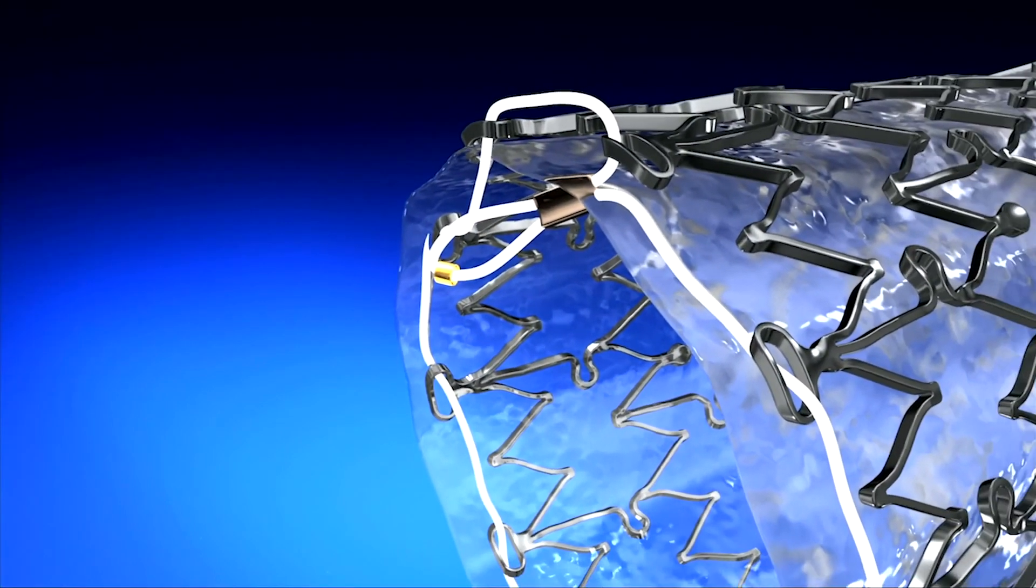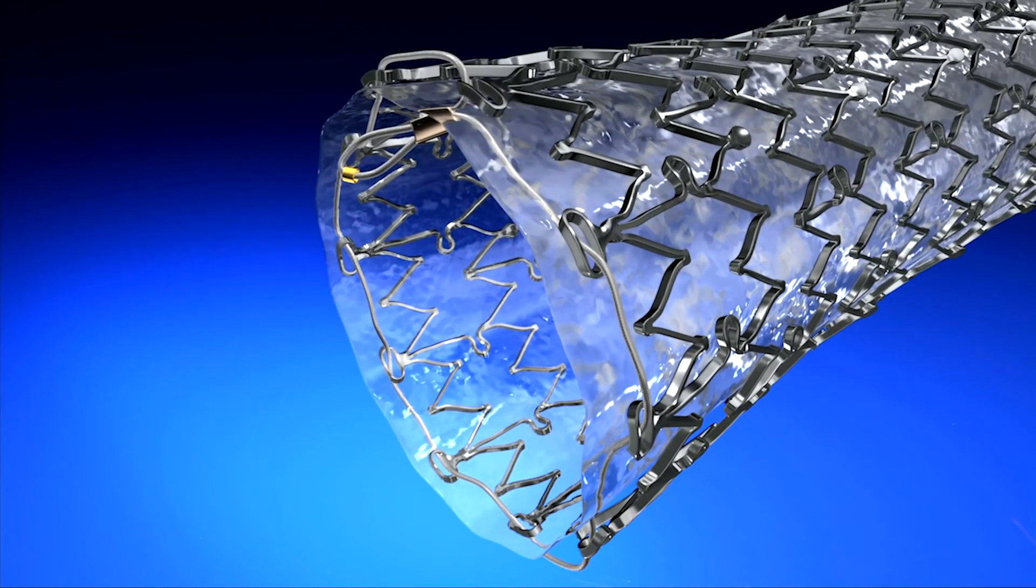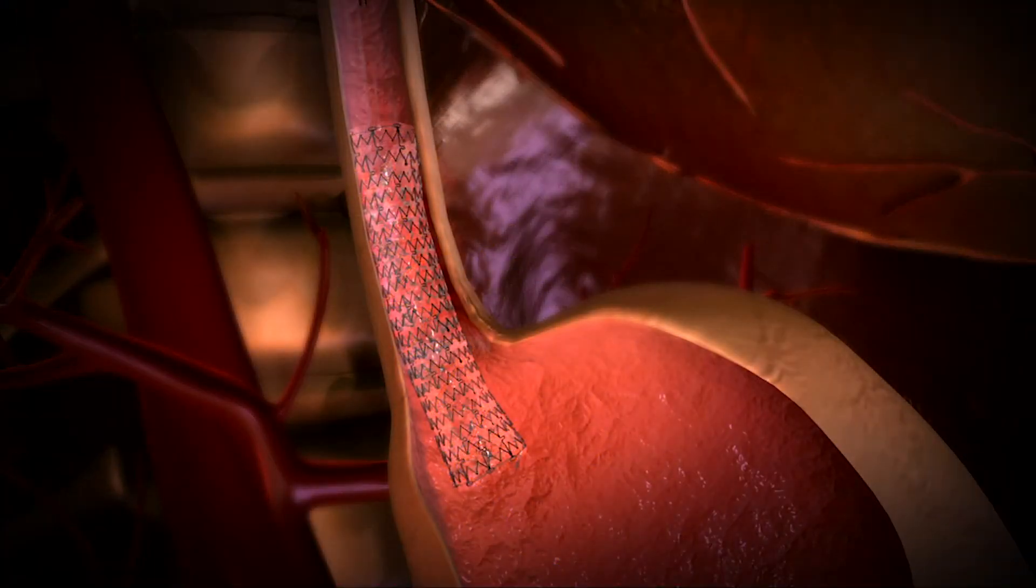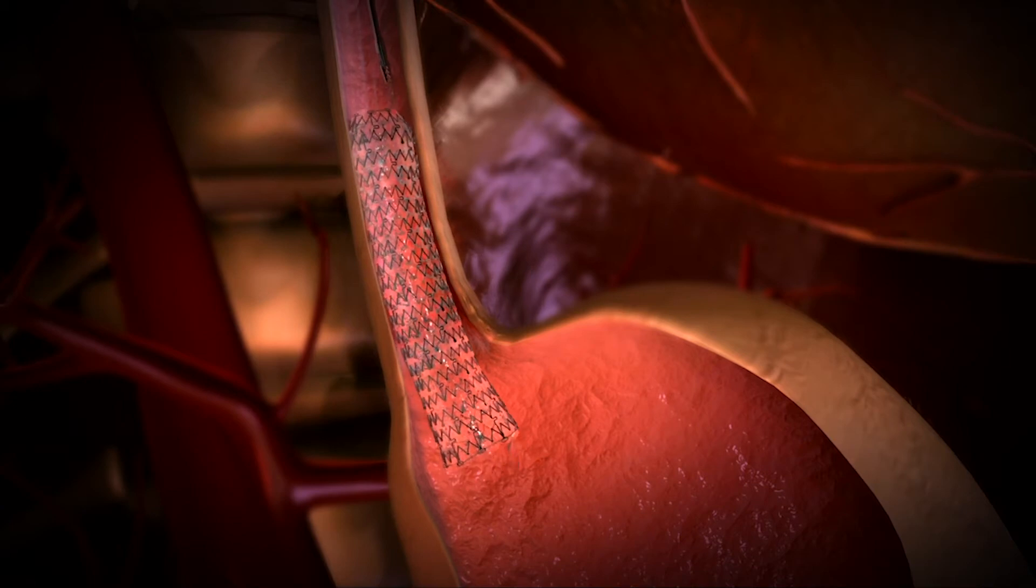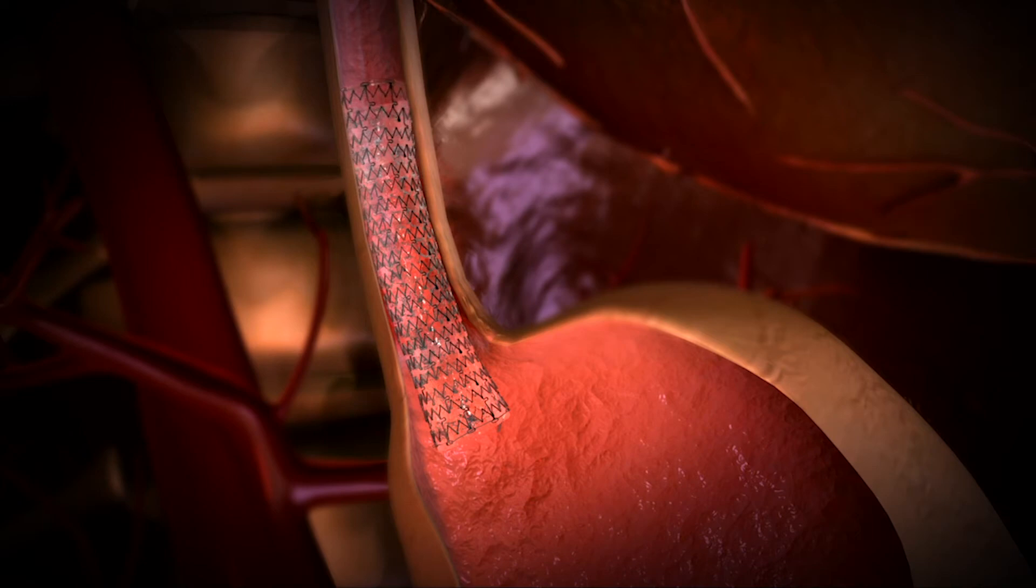The braided nitinol suture and corresponding suture eyelets ease purse stringing and separation of the stent from the mucosal wall. The strength of the metal suture allows the use of most endoscopic forceps while reducing the occurrence of bothersome suture breaks.